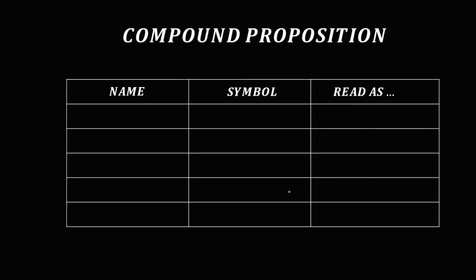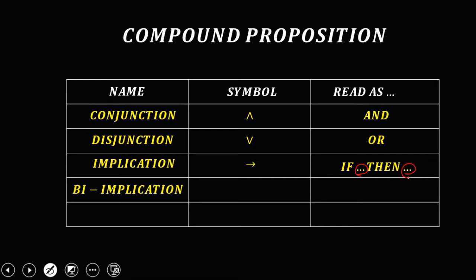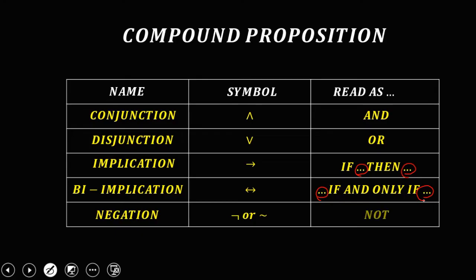The first one is the conjunction — this is the symbol, read as 'and.' Disjunction — the symbol, read as 'or.' We have the implication or conditional — that's the arrow — 'if the first statement, then the second statement.' Then the biconditional — the double arrow — 'first statement if and only if the second statement.' And the last one is negation — this is the symbol, that's 'not.'